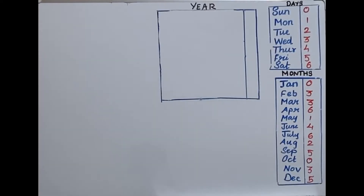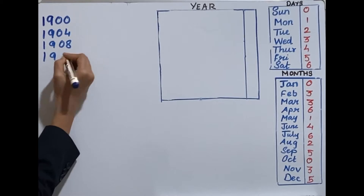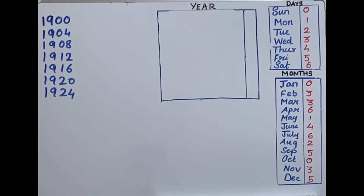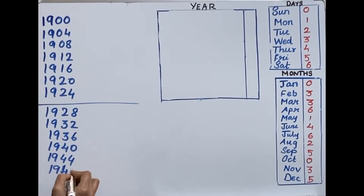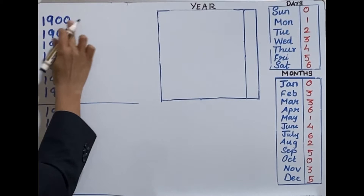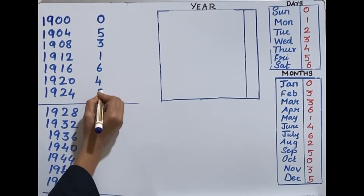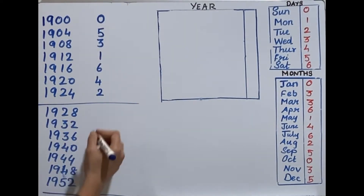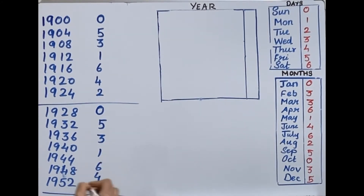Next is the year table. The corresponding values for these years: 0, 5, 3, 1, 6, 4, 2. After 28 years the same pattern repeats — so it's again 0, 5, 3, 1, 6, 4, 2. The next set of 28 years will have the same values.